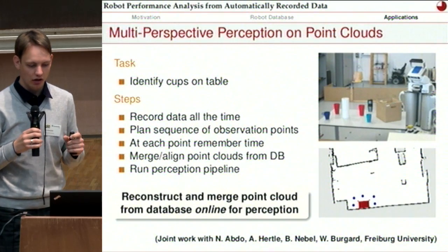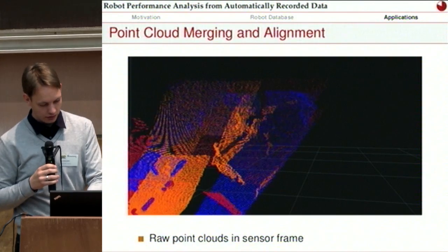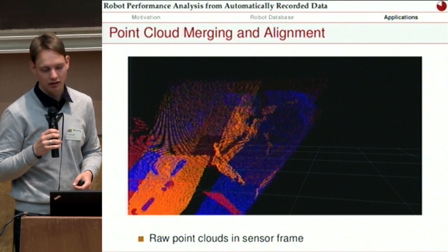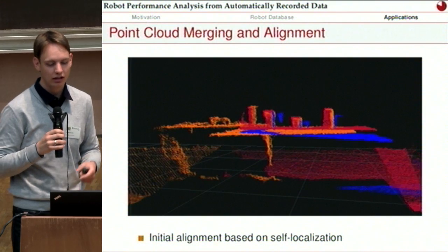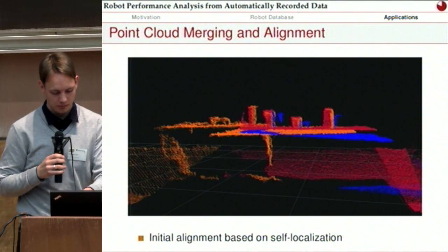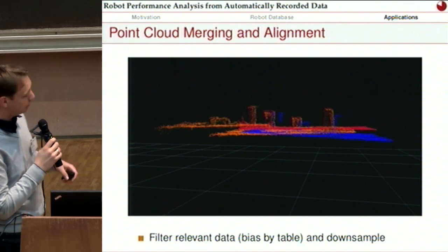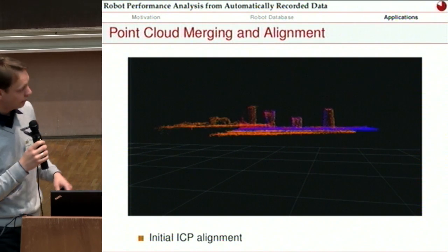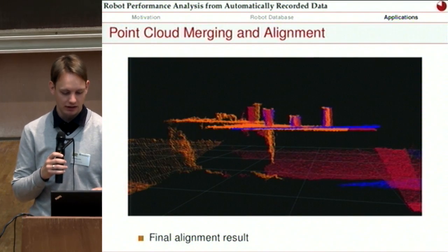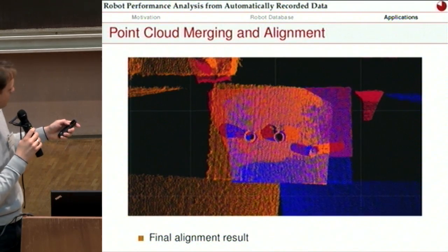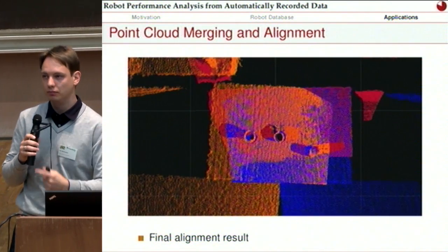When you first get the point clouds from the database they look like junk, but once you do an initial alignment based on the AMCL localization the robot had, you already get a somewhat good estimate. Then we do additional alignment steps: first we filter out data we're not interested in and downsample it, then do ICP for the first alignment which mostly aligns by table planes, then remove the table plane to bias it more toward the objects of interest. You get the full merged point cloud — and here you can see why we need this, because there are shadows you cannot fill unless you look from multiple perspectives.